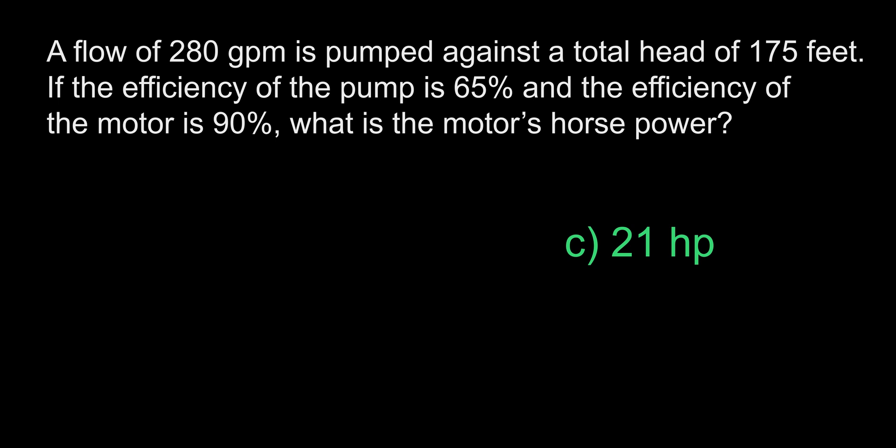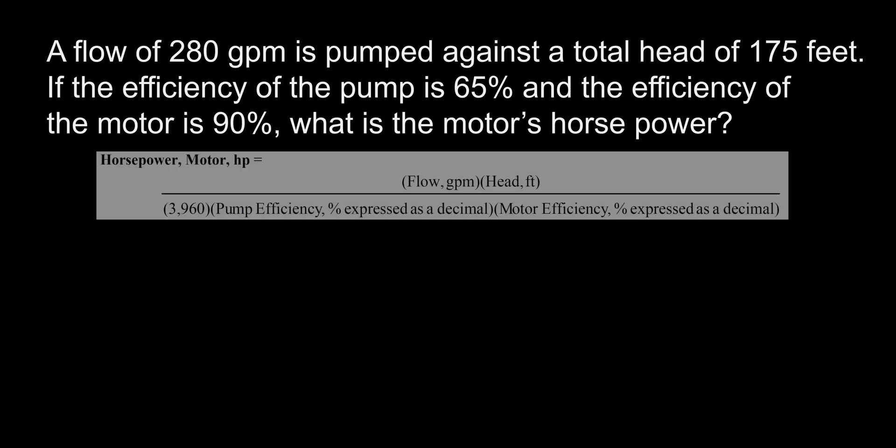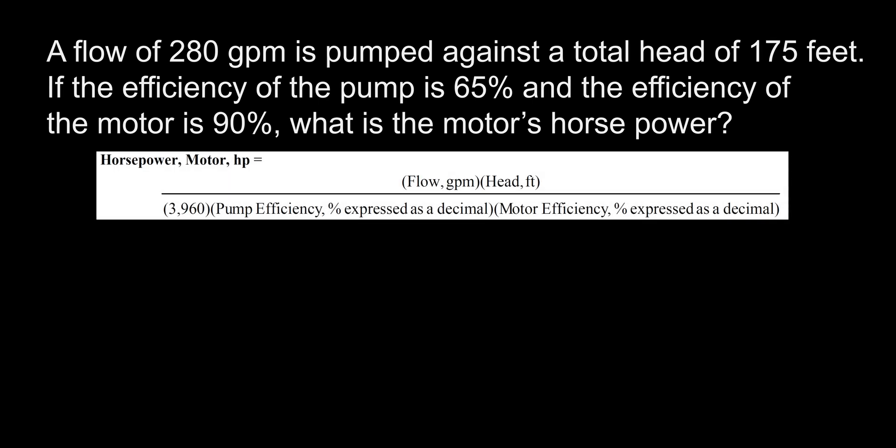The answer is C, 21 horsepower. Let's put this question in perspective. Imagine you have a pump that can move water at a rate of 280 gallons every minute. This water is being pushed uphill to a height of 175 feet. We want to know how powerful the motor that runs the pump is, so we can figure out how much work it's doing. To solve for this, we use the horsepower formula that takes into account how much water is being moved, how high it's being moved, and how efficiently the pump and motor are working.